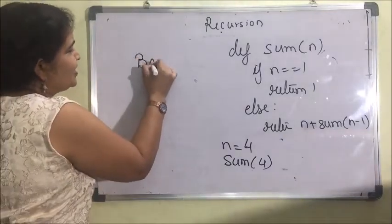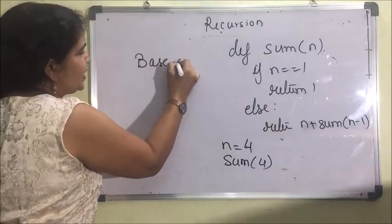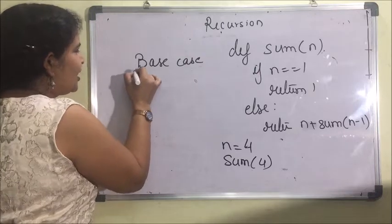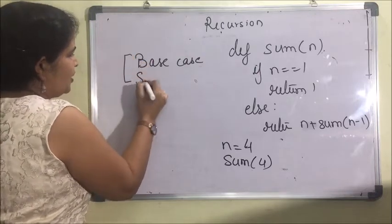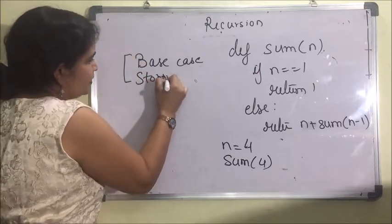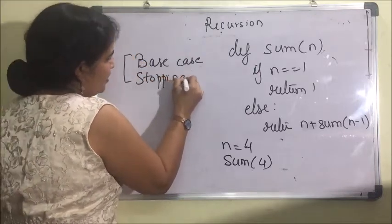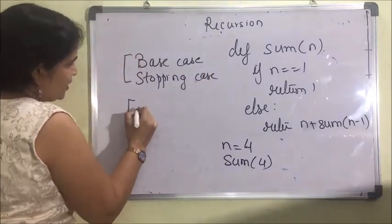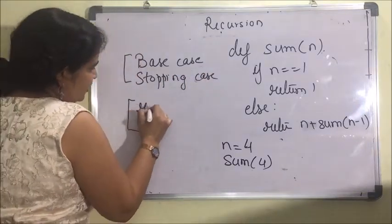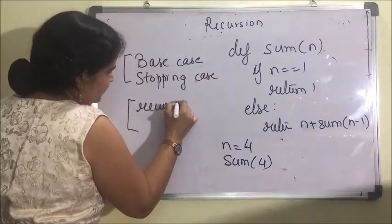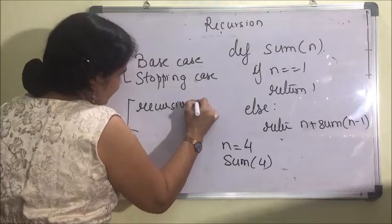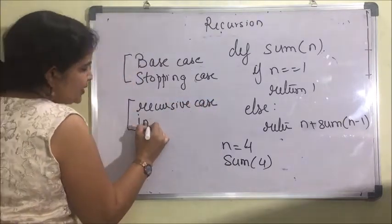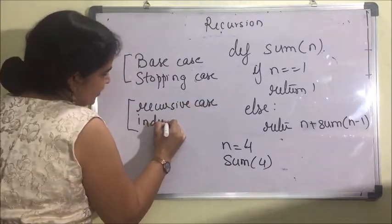One case is the base case, also known as the stopping case. The second case is the recursive case, also known as the inductive case.